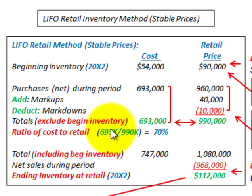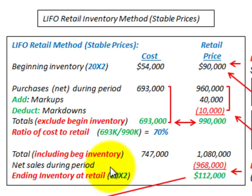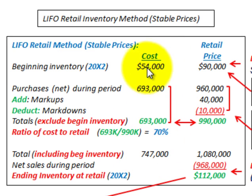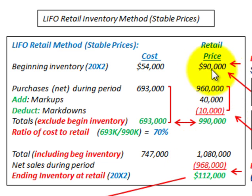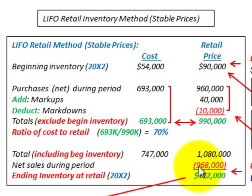Our ratio of cost to retail is just a division: $693,000 divided by $990,000 gives us a 70% ratio. Now we total the amounts including our beginning inventory. The $693,000 plus the $54,000 beginning inventory cost gives us $747,000 at cost. For the retail price, we include the beginning inventory of $90,000, adding that to the $990,000 to get $1,080,000.